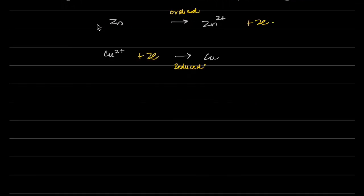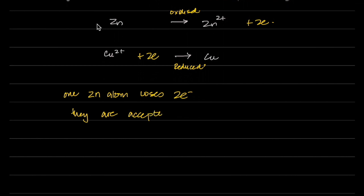At the atomic level, each zinc atom loses two electrons, which are accepted by each copper ion. Zinc is more reactive and copper is less reactive, so this direction of electron transfer makes sense.